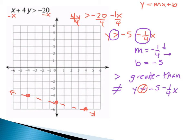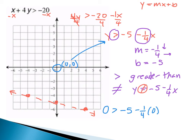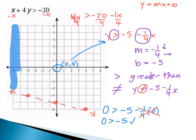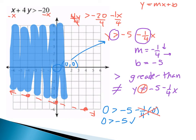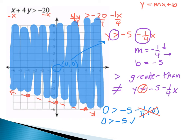Now choose a test point. Always use (0, 0). Plug it in: 0 is greater than negative 5 minus 1 over 4 times 0. The fraction term drops out, leaving 0 is greater than negative 5. Is 0 greater than negative 5? Yes — that works. If the test point at (0, 0) works, that means everything in this region of the graph is a solution. So I'm going to highlight every point in this region — everything above the line gets shaded.